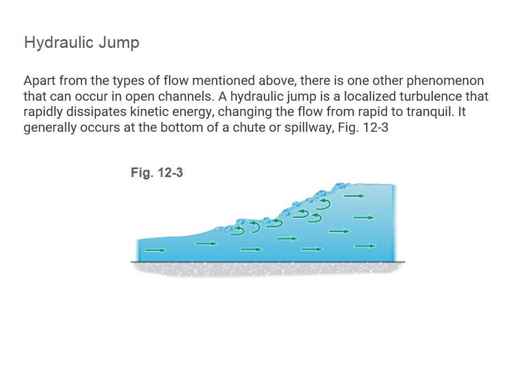Hydraulic jump is another kind of flow that you often see. It is a localized turbulence that rapidly dissipates kinetic energy, changing the flow from rapid to tranquil. It generally occurs at the bottom of a chute or spillway.